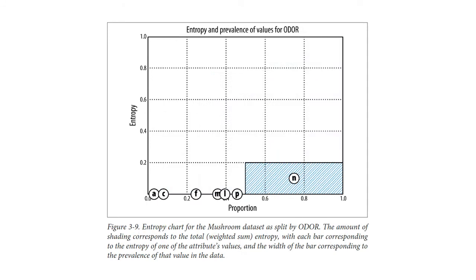Here is the graph produced by the attribute odour. Many of the values, such as a for almond, c for creosote, and m for musty, produce zero entropy partitions. Only n, for no odour, has a noticeable entropy of about 20%. So what is this chart telling us? Well, without going into the maths or showing the entropy for all the other attributes, odour in fact has the highest information gain of any attribute in the mushroom data set. In other words, it has very low entropy.